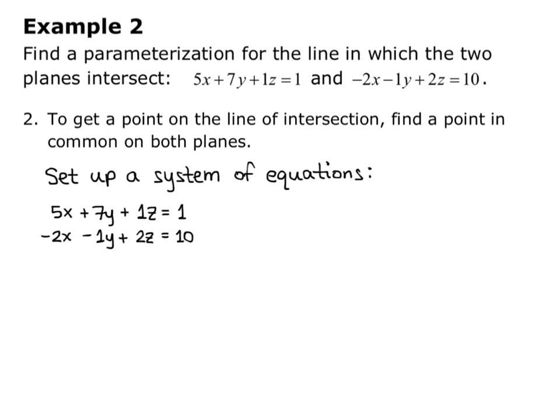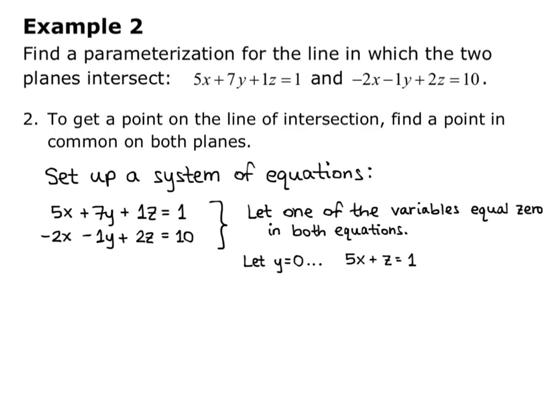The easiest way to solve this system, since we just want one point in common, is let one of the variables equal 0. So if I let one of the variables equal 0 in both equations, that will give me a system of two equations with two unknowns. In this case, I'm going to let y equal 0. You could pick any of your three variables. So if y equals 0, then the first plane becomes 5x + z = 1, and the second equation becomes -2x + 2z = 10.